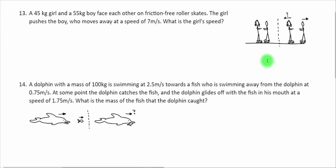Problem number 13 says a 45 kilogram girl and a 55 kilogram boy face each other on friction-free roller skates. The girl pushes the boy who moves away at a speed of 7 meters per second. What is the girl's speed? So I'm going to go ahead and label girl as object one, boy as object two.